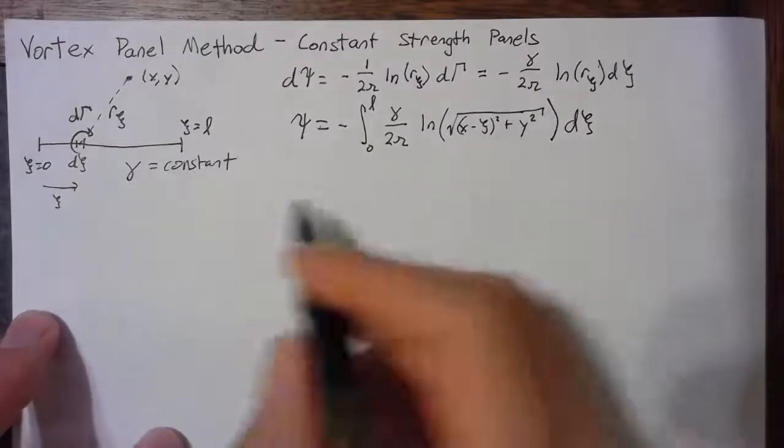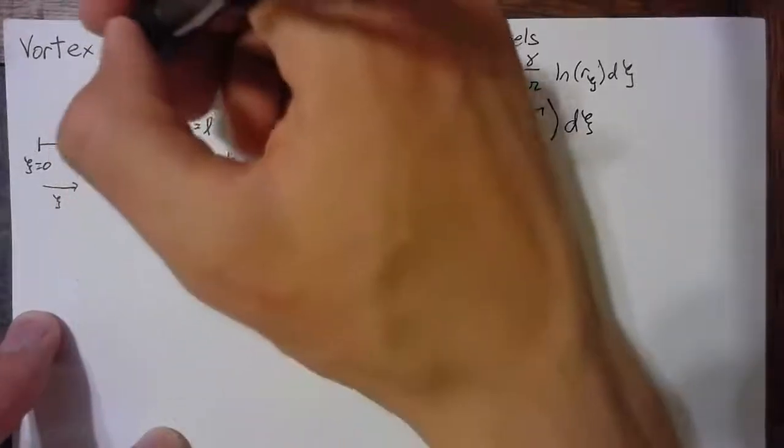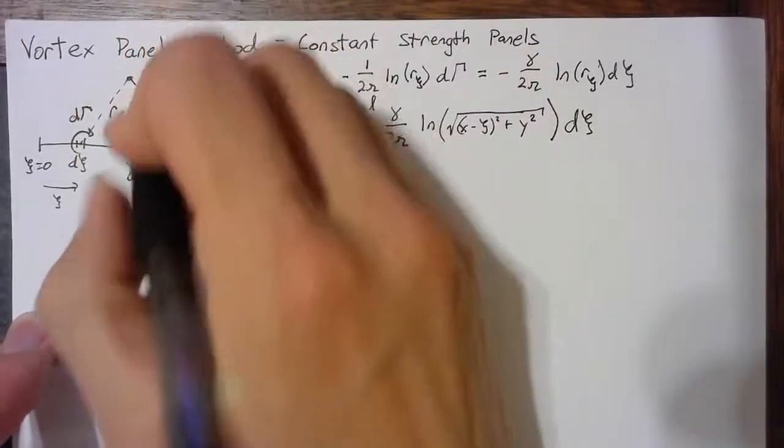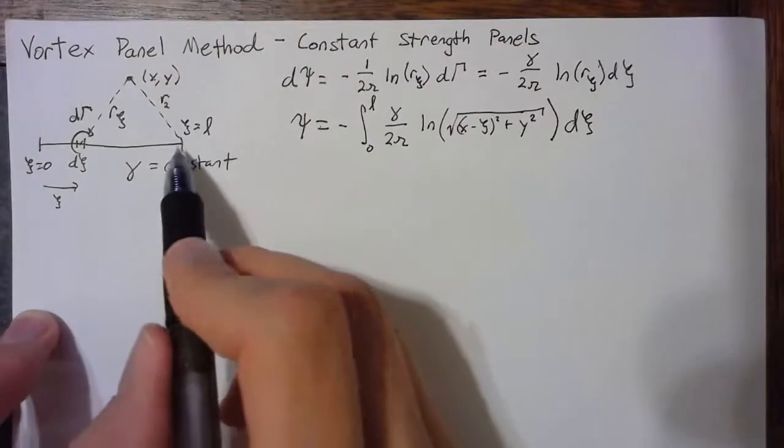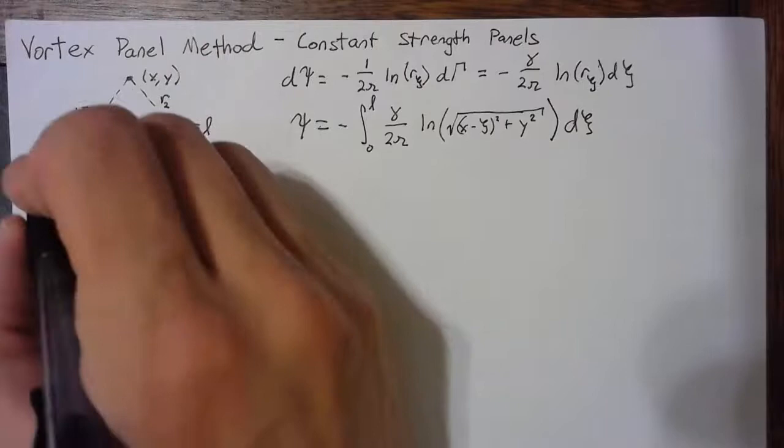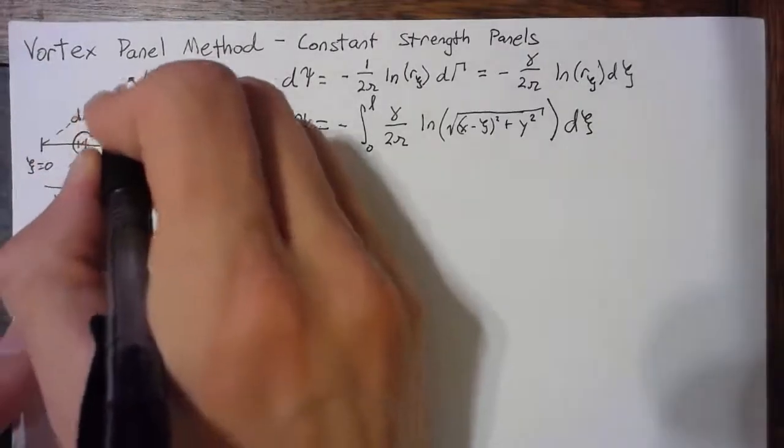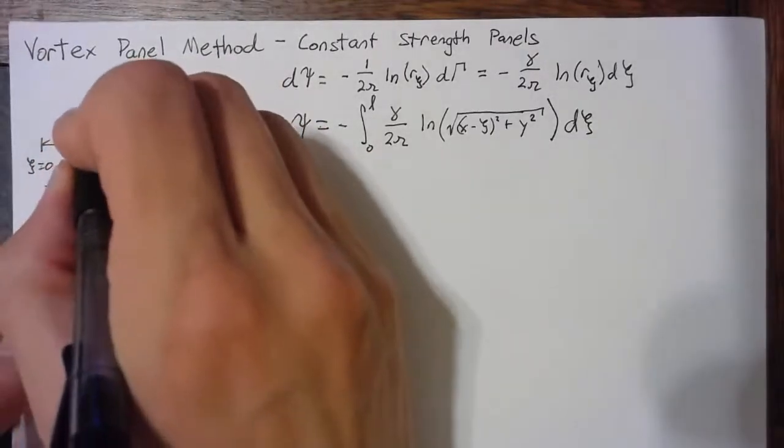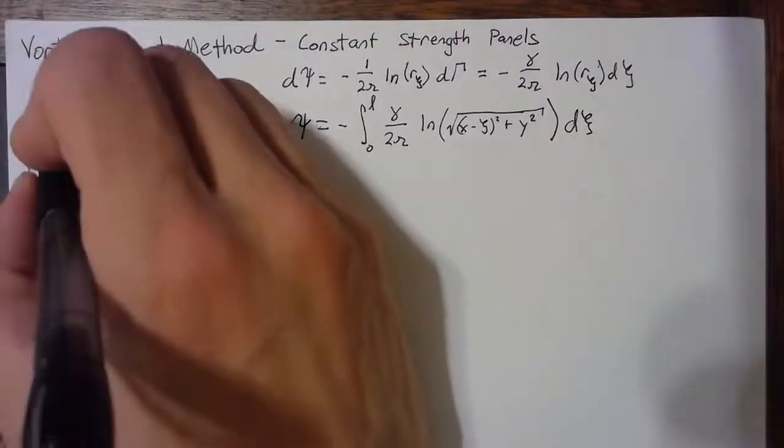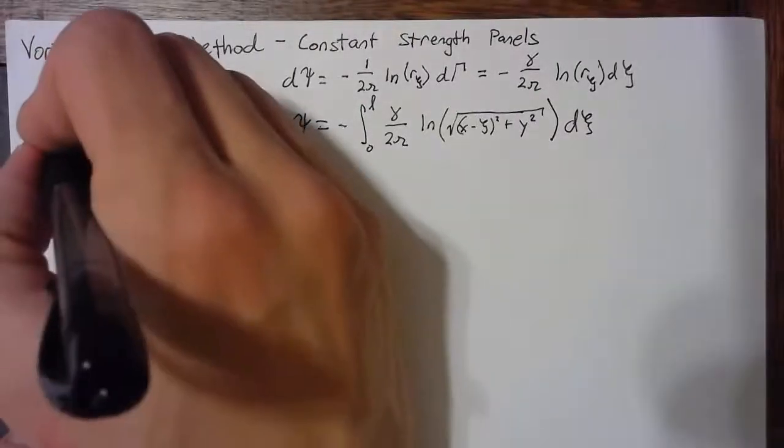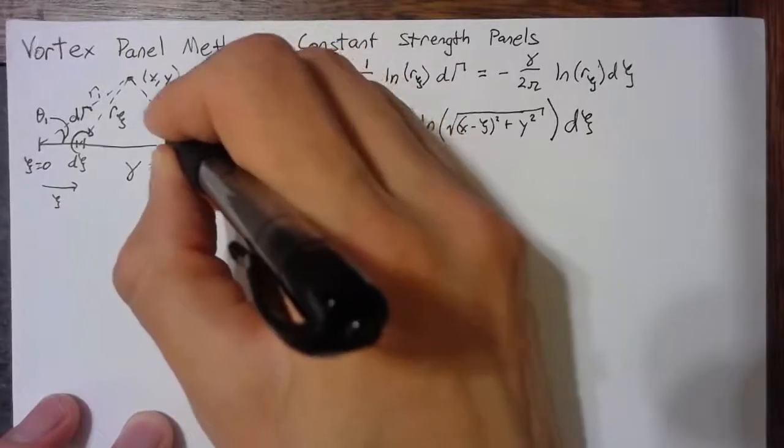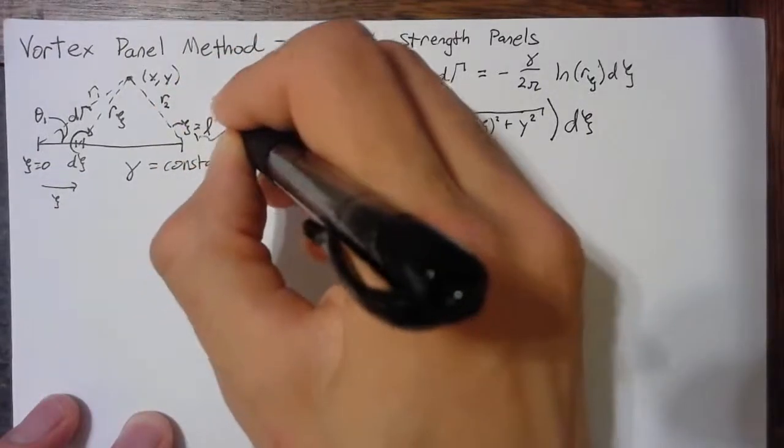Whenever we do this integration, a couple more terms pop out. Those are this r2, which is the distance between this point at the end and this xy, and then we'll also have an r1, which is the distance to the other side of the panel. We're also going to be interested in these angles. We'll call this guy theta1 and we'll call this guy theta2.